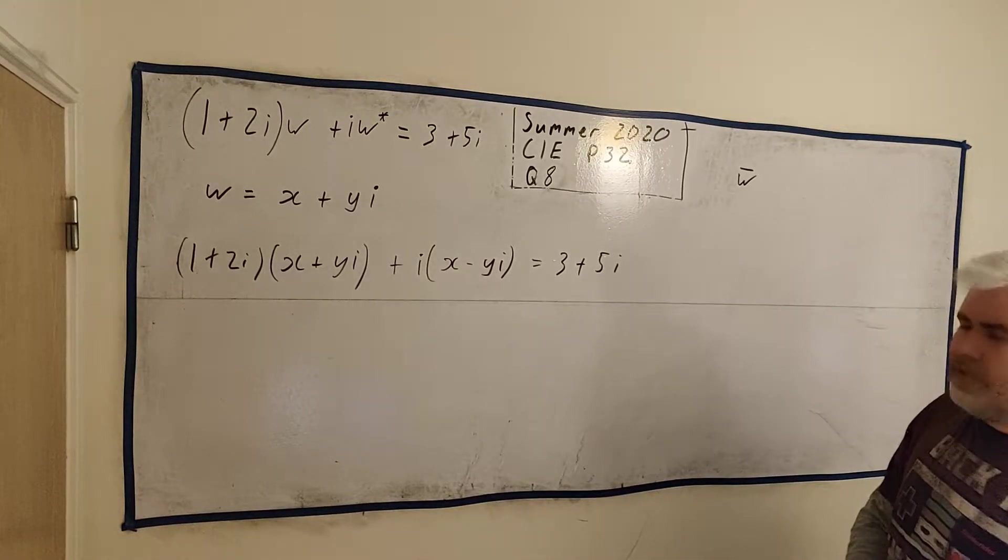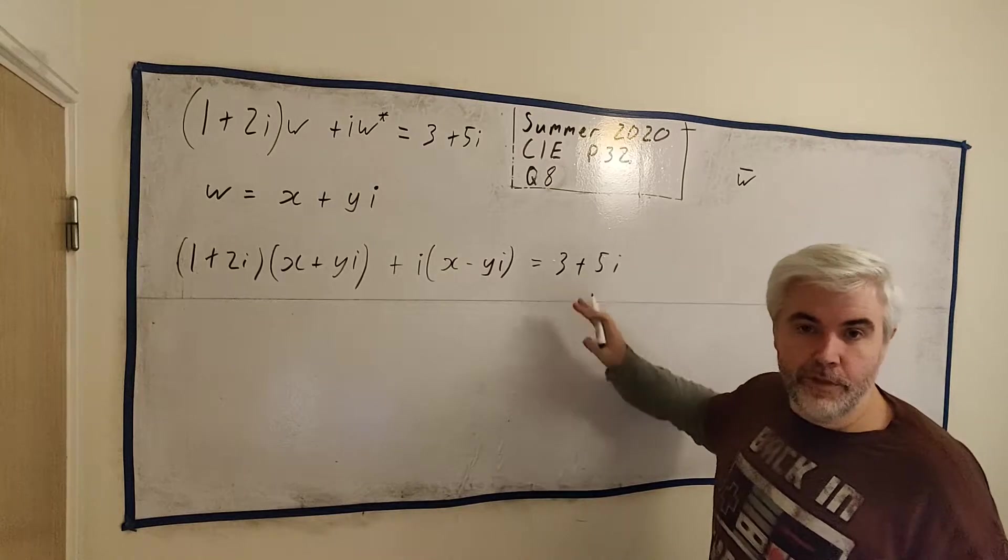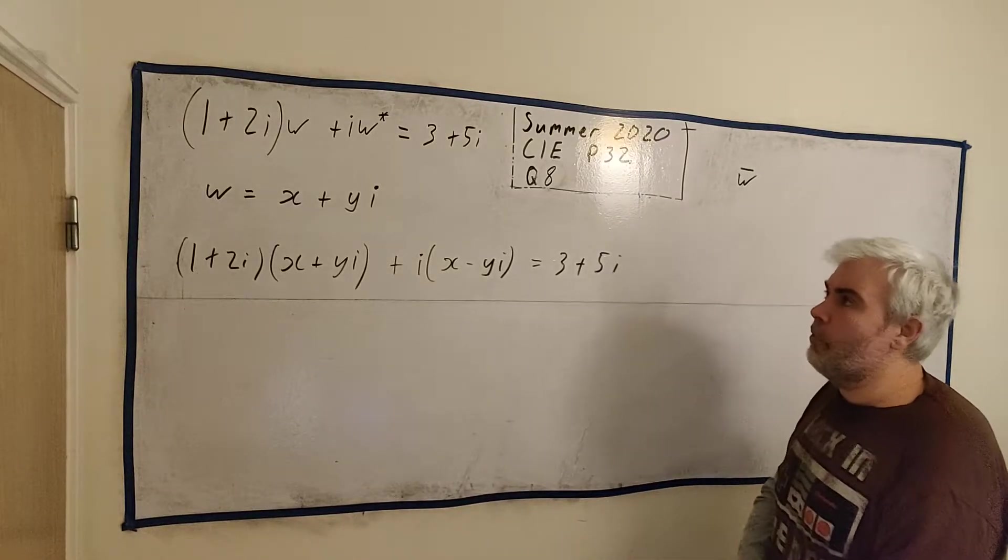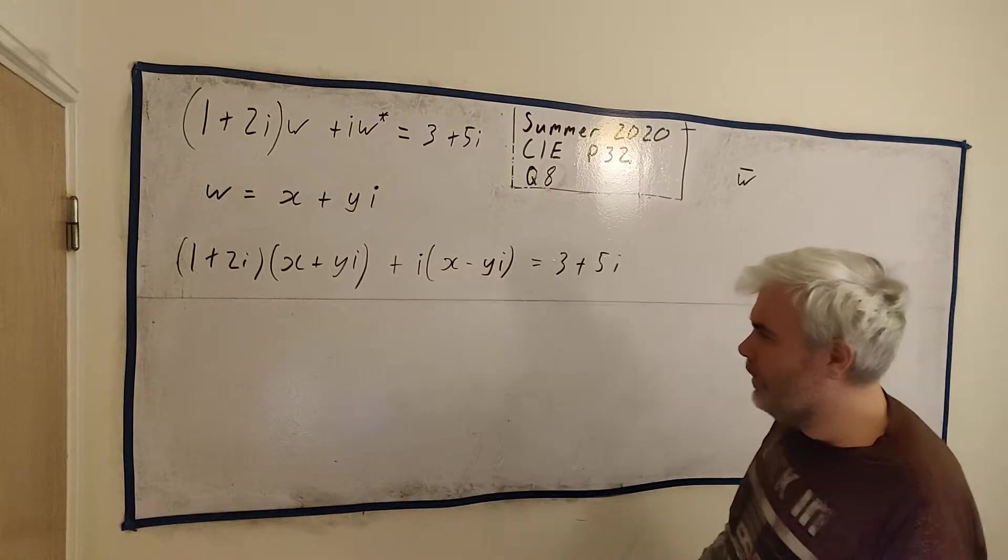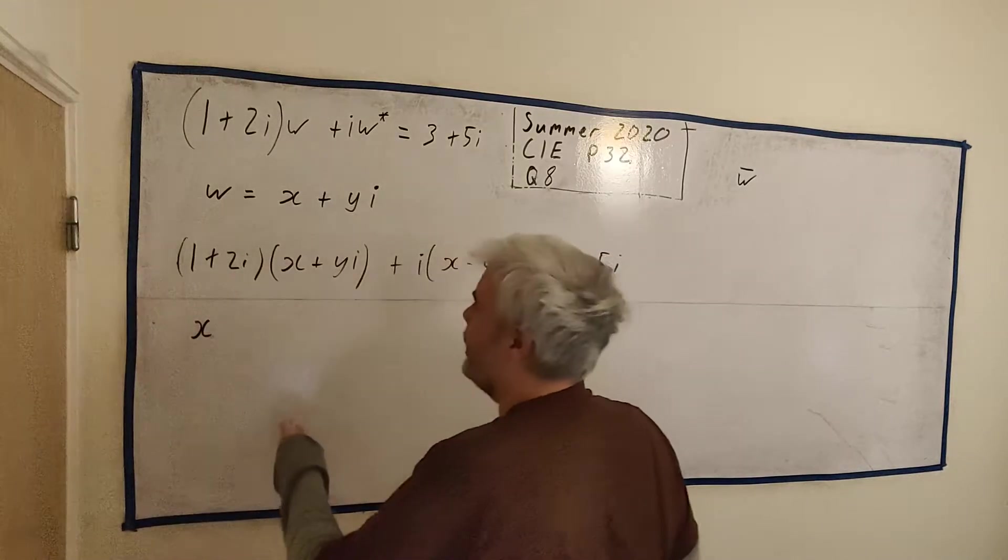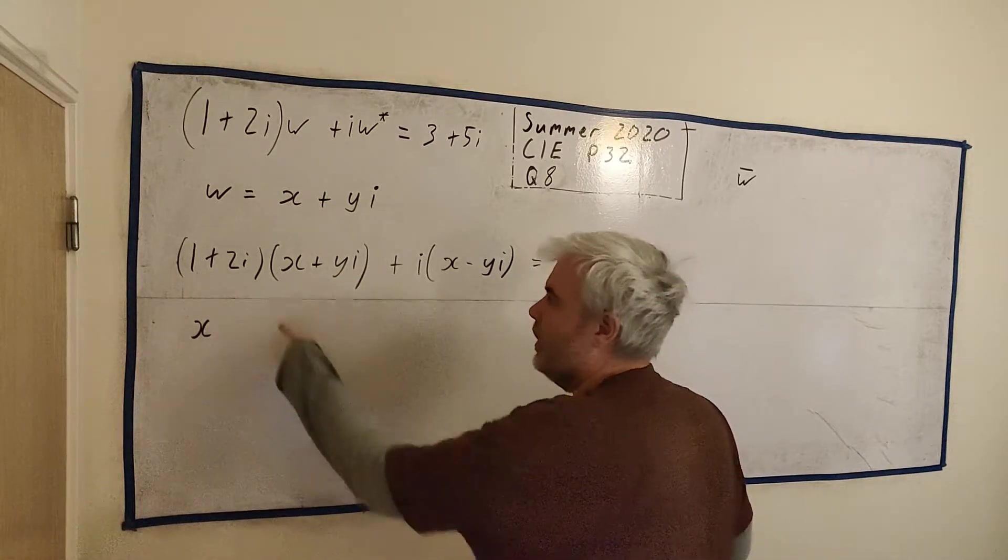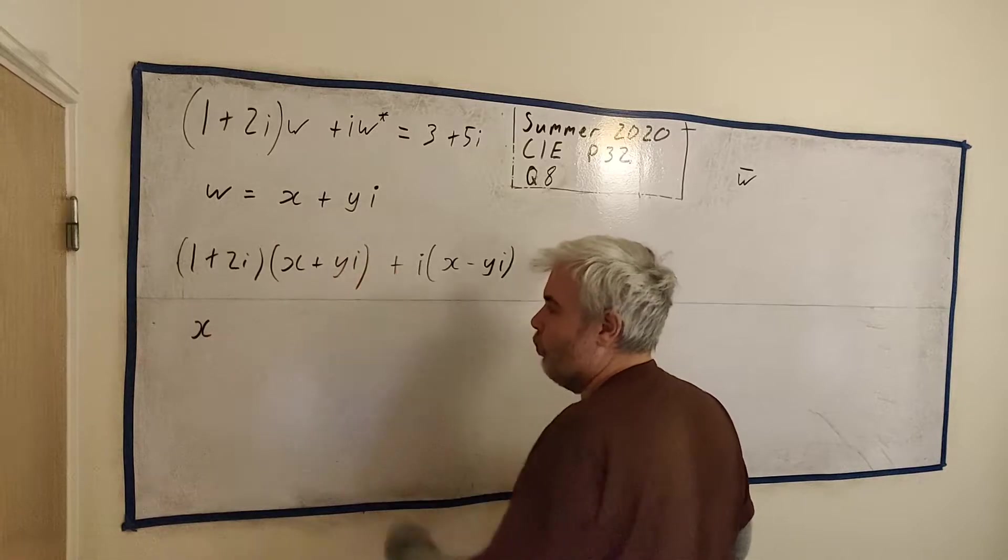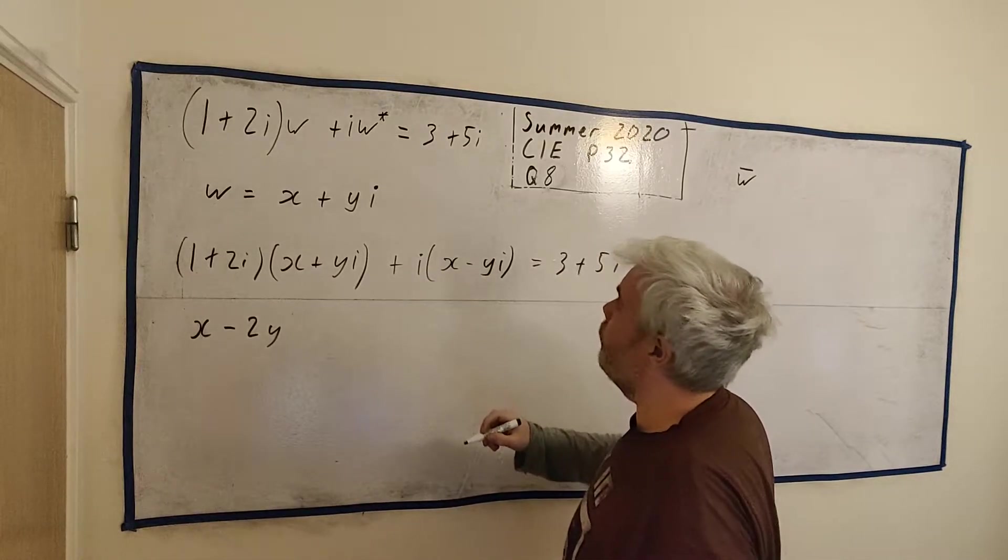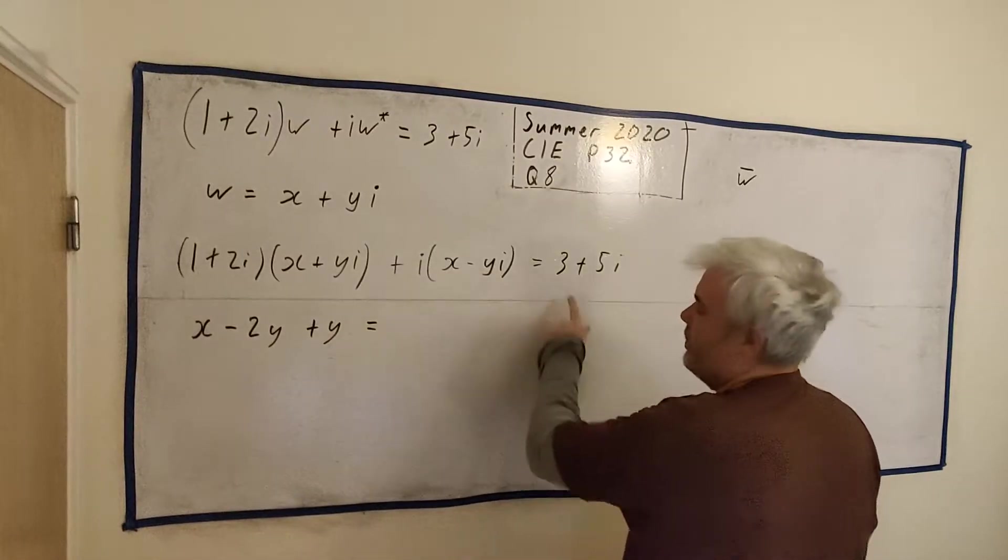So let's write this equation again but instead of W, let's put this in. We get 1 plus 2i multiplied by x plus yi plus i multiplied by, now W star here is the conjugate. Sometimes you also see it wrote as W with a bar over it. And all that means is we change the sign of the imaginary part. So we get x minus yi equals 3 plus 5i.